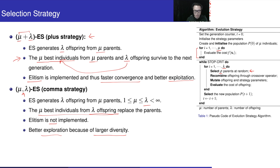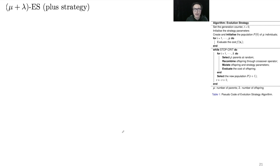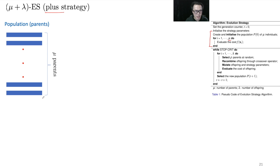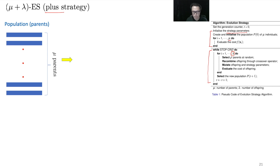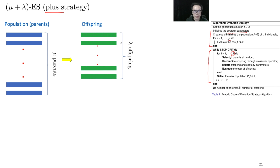Larger diversity means a higher risk of having worse individuals in the next population. To visualize this, we look at an animation demonstrating the plus strategy. According to the pseudo code, we generate the population with μ individuals — the μ parents — where each individual has decision variables x as well as the strategy parameters. From these μ parents we generate the λ offspring, shown here as green bars.